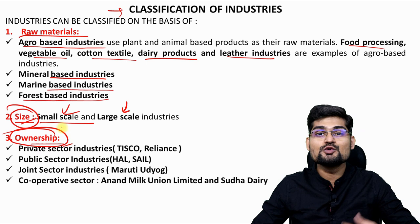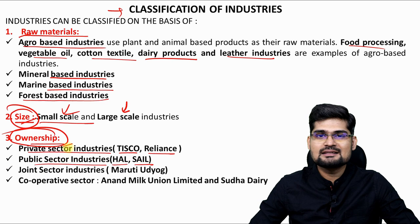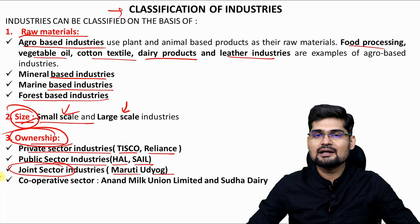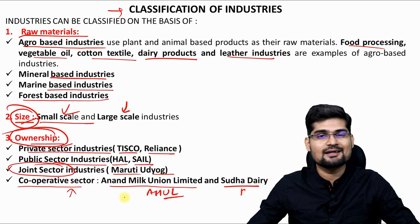Then comes ownership, the third classification — who is owning it? Is it privately owned, for example TISCO or Reliance which is in private hands? Then public sector enterprises like HAL and SAIL. Then joint sector units like Maruti Udyog, where there is a combination of public and private. And then you have cooperative sector as well — for example, Anand Milk Union Limited, Amul, Operation Flood and Sudha Dairy.